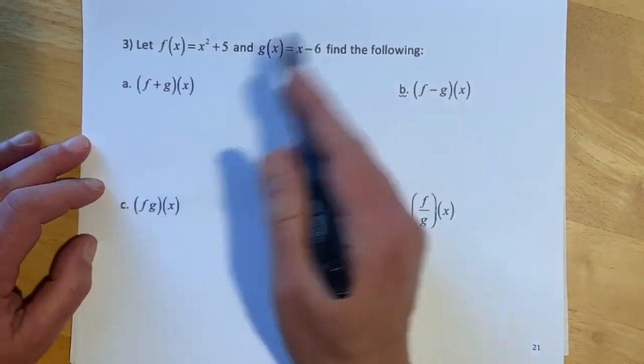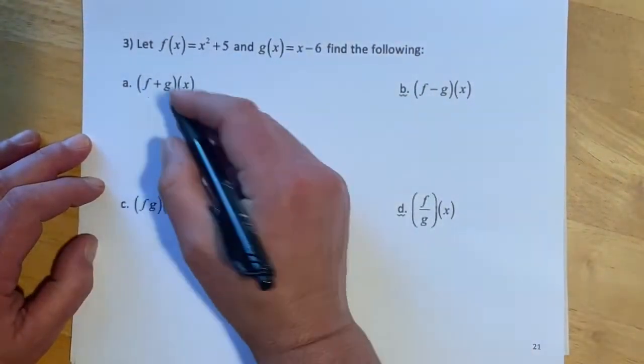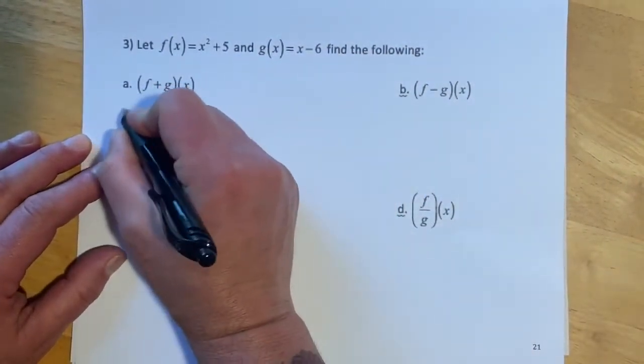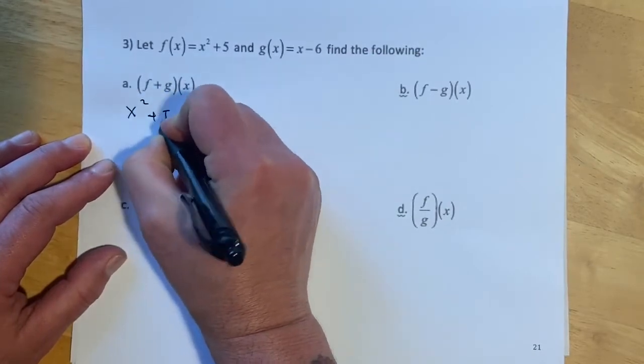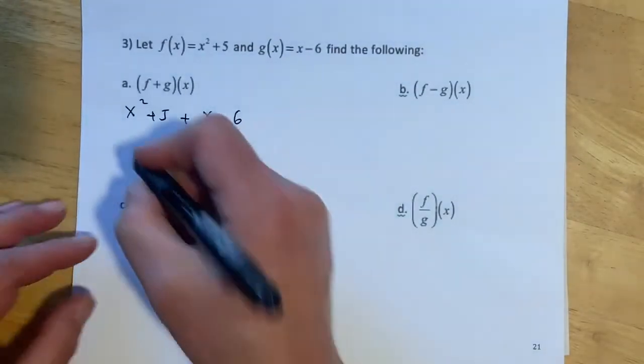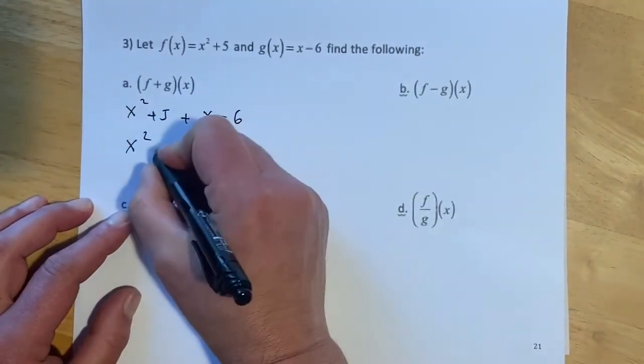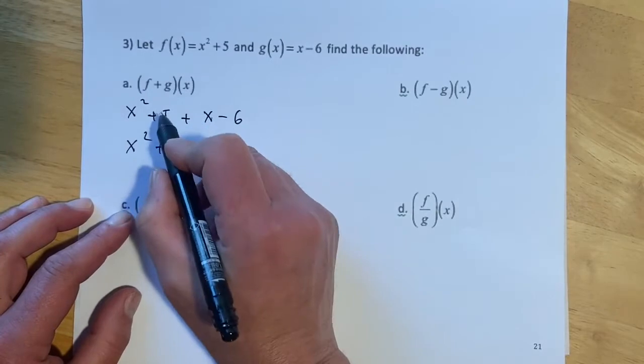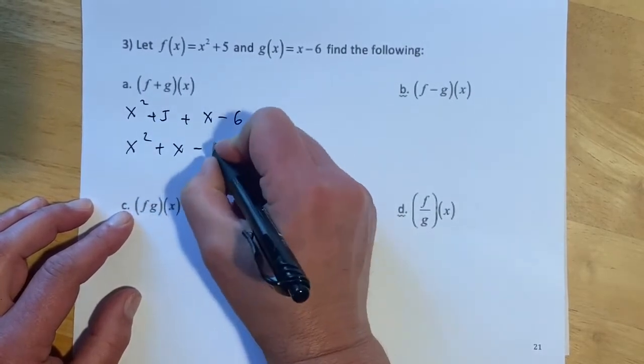And then this is doing the exact same thing but with algebra. So f plus g would be x squared plus 5 plus x minus 6. And then we're just simplifying from there. So x squared plus x and then 5 minus 6 would be minus 1.